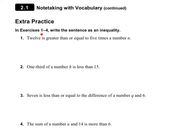On the next page, exercises 1 through 4 ask us to write the sentence as an inequality. Number 1: '12 is greater than or equal to 5 times the number n.' When writing a word sentence as an inequality, find the word 'is' — it separates the left side from the right side. We have 12, then 'is greater than or equal to,' giving us the ≥ symbol, and then 5n. Since a constant and variable next to each other means multiplication, we write 12 ≥ 5n.